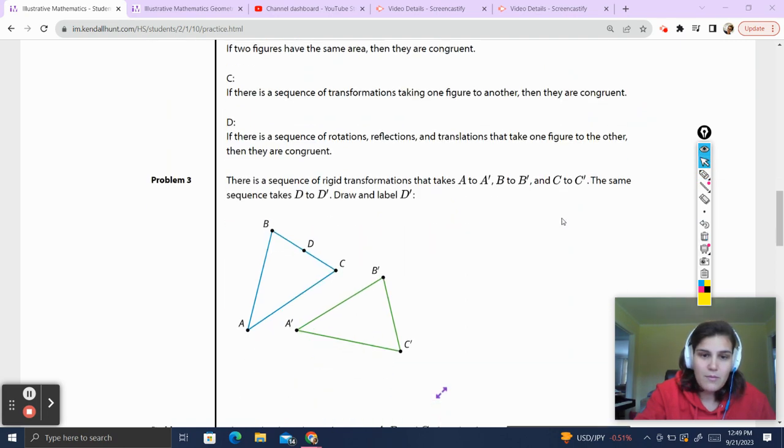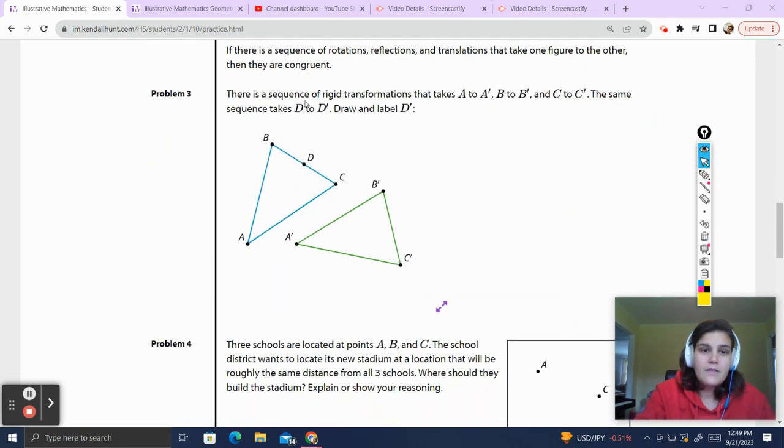Let's go on to problem number three. There is a sequence of rigid transformations that takes A to A prime, B to B prime and C to C prime. The same sequence takes D to D prime. Draw and label D to D prime.